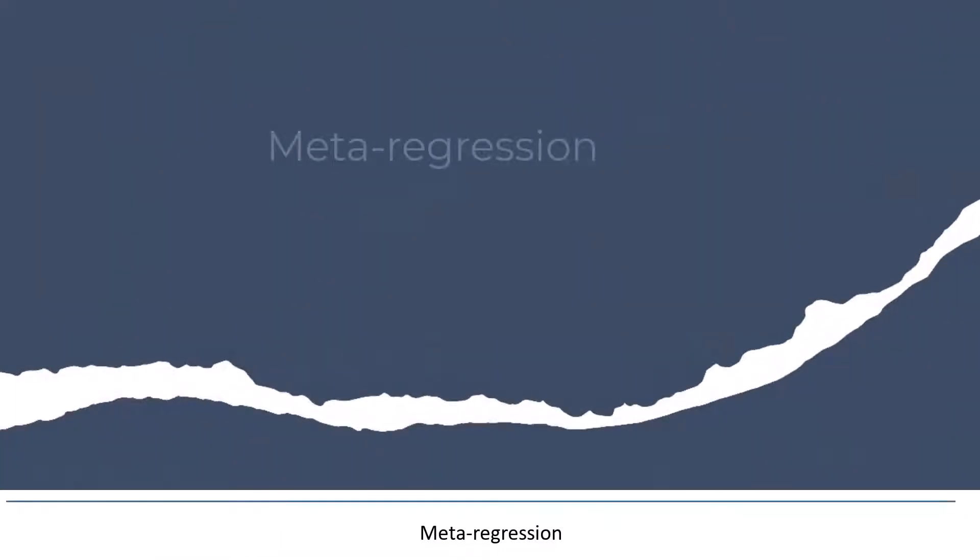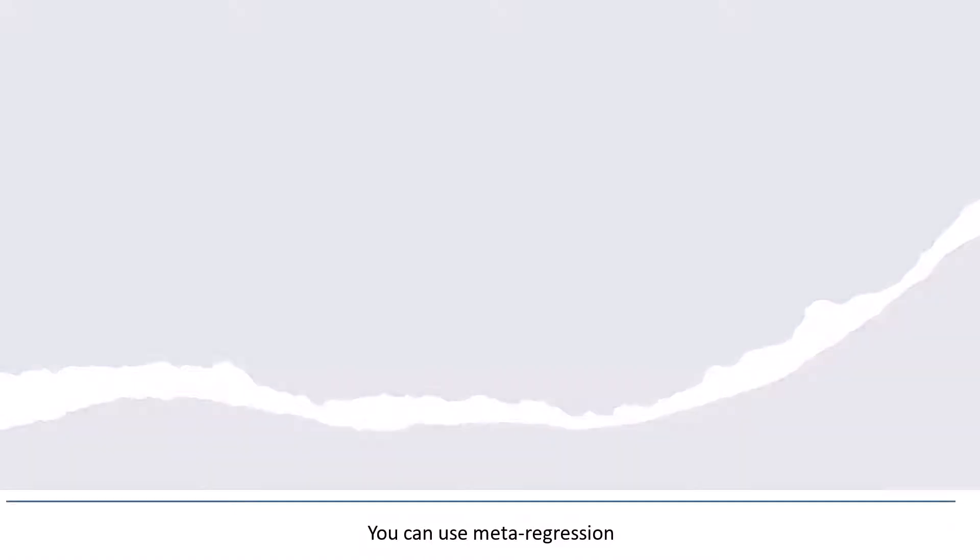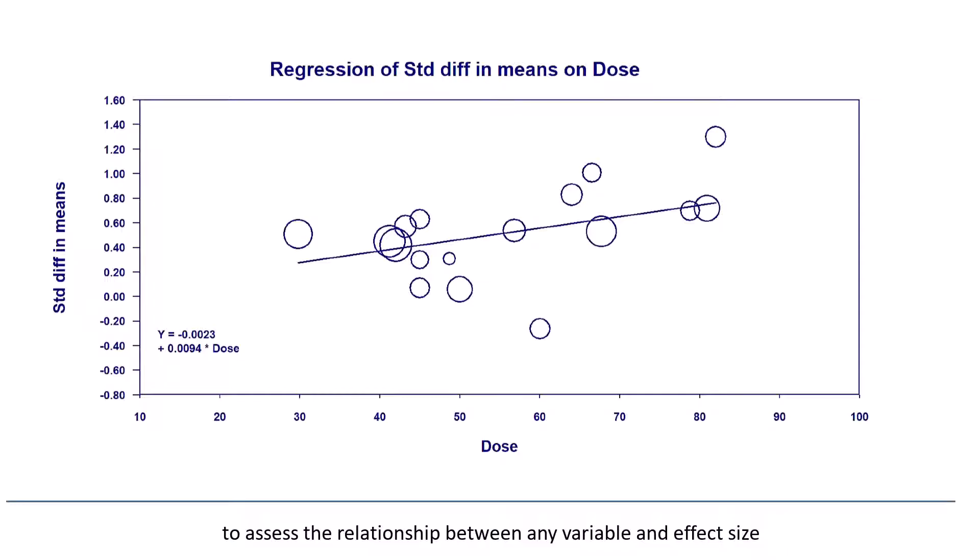Meta regression. You can use meta regression to assess the relationship between any variable and effect size. For example, this plot shows the relationship between dose and the magnitude of the effect. As the dose increases from 30 mg to 80 mg, the predicted effect size increases from 0.28 to 0.75.